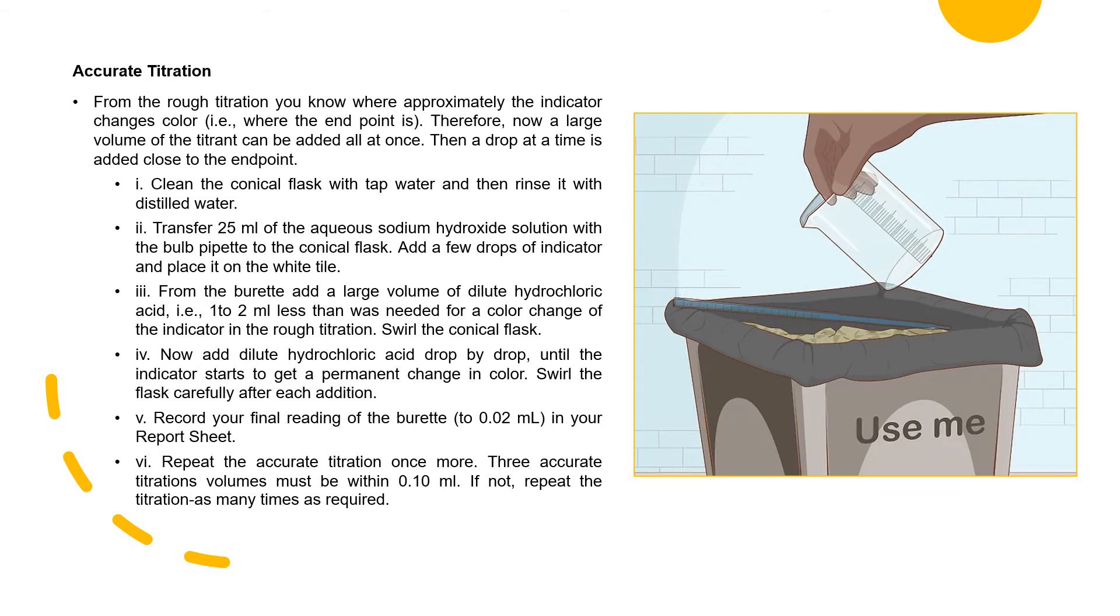Now add dilute hydrochloric acid drop by drop until the indicator starts to get a permanent change in color. Then again, you must swirl the flask. Record your final reading of burette in your report sheet. Repeat the accurate titration once more. Three accurate titration volumes must be within 0.10 ml. If not, repeat the titration as many times as required if the difference between accurate titrations are not within 0.10 ml.